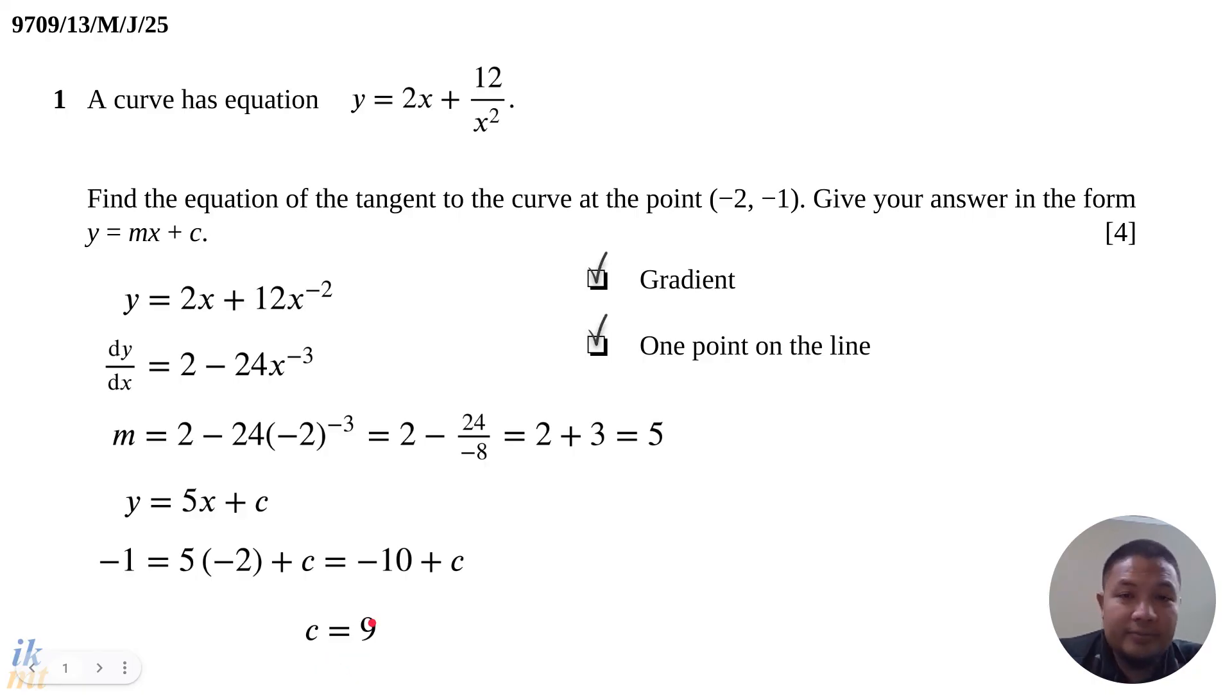Now don't stop there. Some students, they like to stop when they have a letter equals a number and they think they're done. Usually, go back to the question, see what they want. The question wants you to write down the equation of the tangent in this form. So we'll go ahead and do that. We'll substitute 9 into c. And we will get y = 5x + 9.